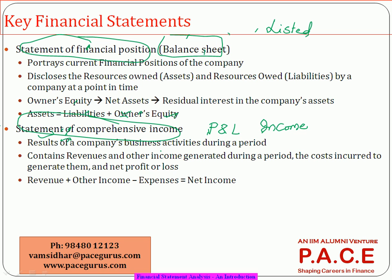We define the period, and whatever has come in and gone out during the period is what we put as part of the income statement or P&L statement. The key items that go into it are revenues — probably from your business operations — and we also use a word called other income, which covers non-business operations. Non-business income is like a company investing money somewhere else — buying shares or bonds of other companies — which also generates returns, similar to how an individual might earn salary as regular income but also earn dividends or rental income from other investments.